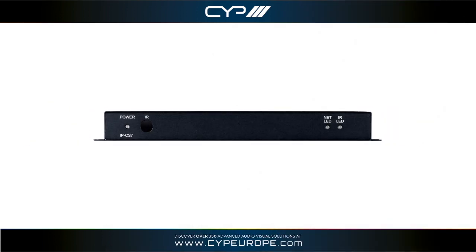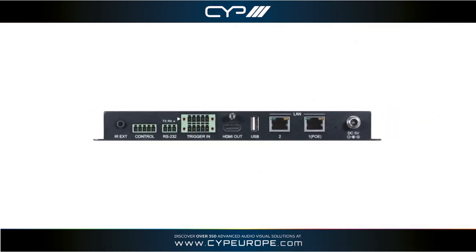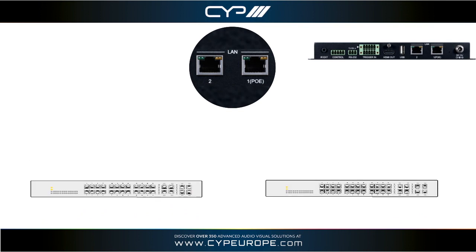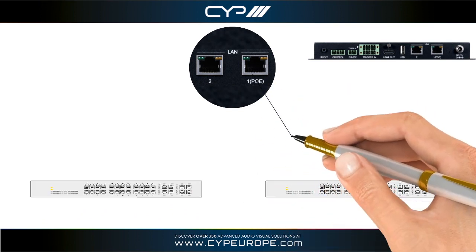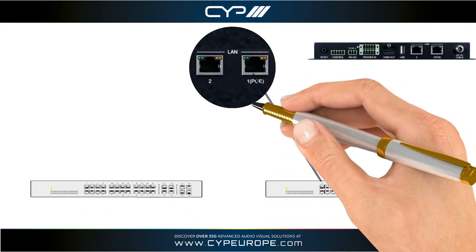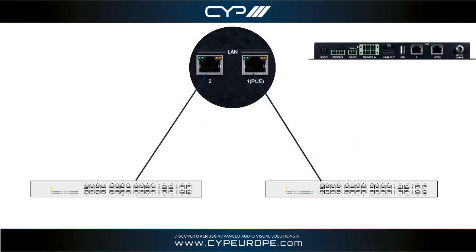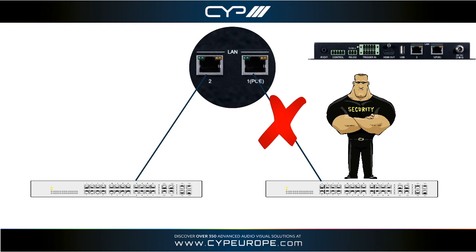Dual LAN connectivity on the device allows the system to run on a bespoke IP network, whilst the additional LAN allows for connection to a secondary network for control and configuration. This is particularly useful if access is prohibited via the LAN network, allowing the IP CS7 to provide a direct link to the IP video network.